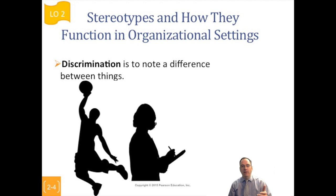For example, here we have a basketball player and a doctor — we can't see much about them — but you'll probably use stereotypes to determine that the basketball player is probably male, probably tall, probably young. And if the NBA statistics hold up, three out of four in the NBA are African-American. Those are some stereotypes.